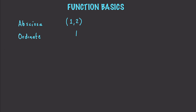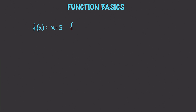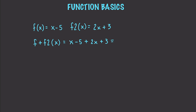If you want to add functions, let's say you have a function f(x) = x minus 5, and you have another function f2(x) = 2x plus 3. For f plus f2 of x, you would work this out by going x minus 5 plus 2x plus 3, which simplifies down to 3x minus 2.